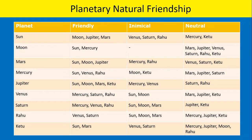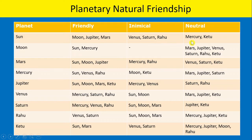These are the natural friendship table. The first column denotes the planet, the second column denotes the friendly planets, the third column denotes the inimical planets, and the fourth column denotes the neutral planets. Taking the first example, the planet is Sun. Sun thinks Moon, Jupiter, and Mars are his friends. Sun thinks Venus, Saturn, and Rahu are his enemies. Sun thinks Mercury and Ketu are neutral.